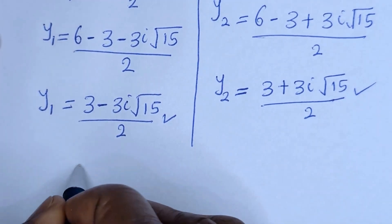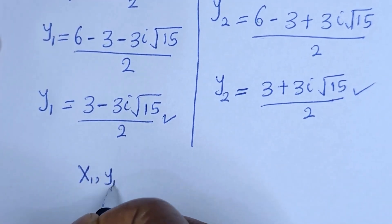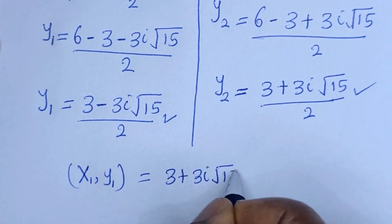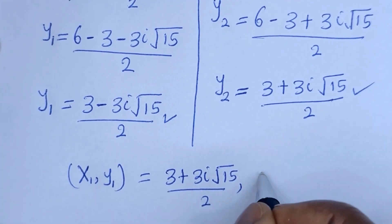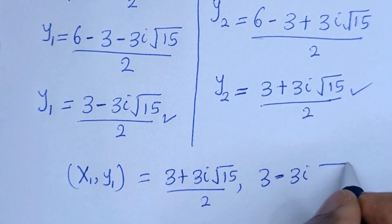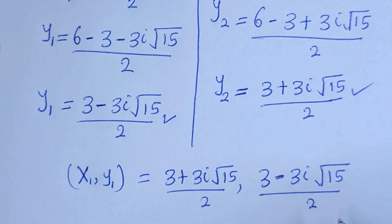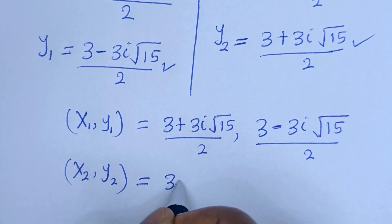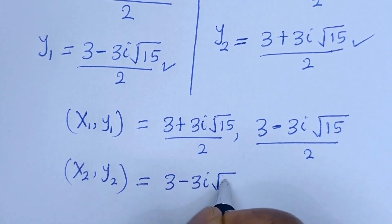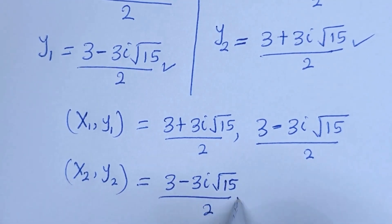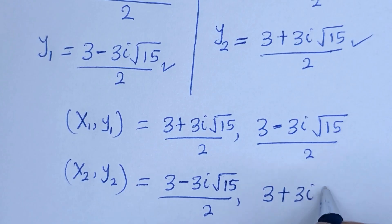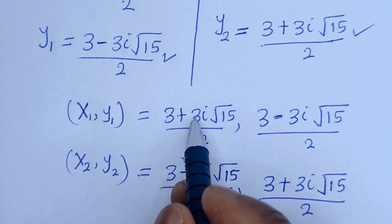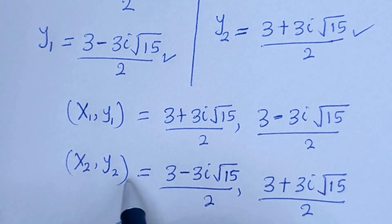Therefore our final answer is: (S1, Y1) equals ((3 plus 3i√15) over 2, (3 minus 3i√15) over 2), and (S2, Y2) equals ((3 minus 3i√15) over 2, (3 plus 3i√15) over 2). You can see that the value of S1 equals the value of Y2, and the value of Y1 equals the value of S2.